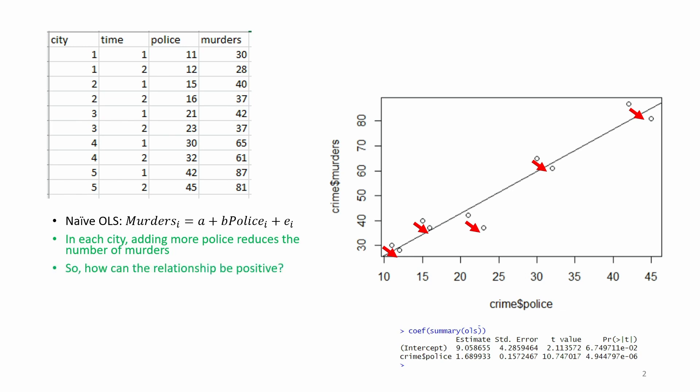So how can the relationship be positive? Does this mean that if a city increases the size of its police force that the number of murders will increase? This goes against expectations. We might have expected b to be negative because of a negative relationship between police and murders, that as the police force increases, the number of murders decreases. So why is our estimate of b positive?